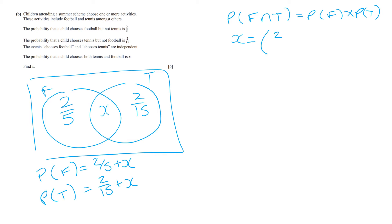So X has to equal 2 fifths plus X times 2 fifteenths plus X. Using FOIL to expand the brackets. And then I'm going to multiply by 75 and that is so that I can eliminate the fractions. That is my preference in working with these.